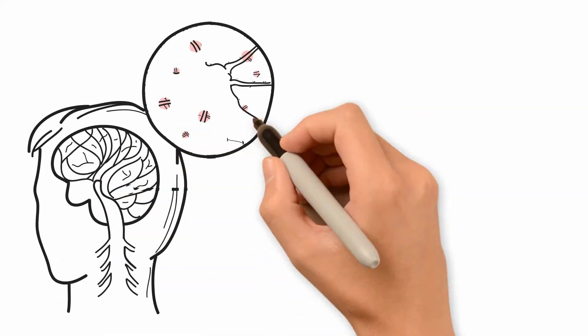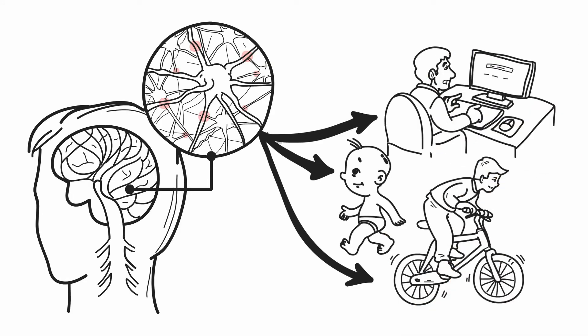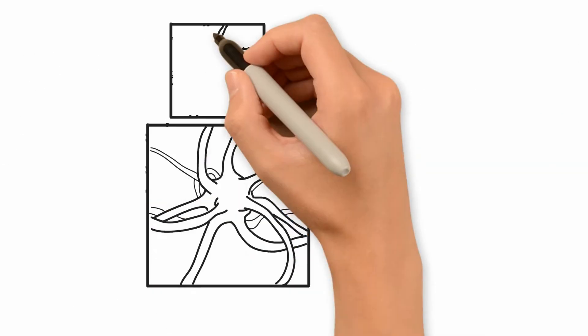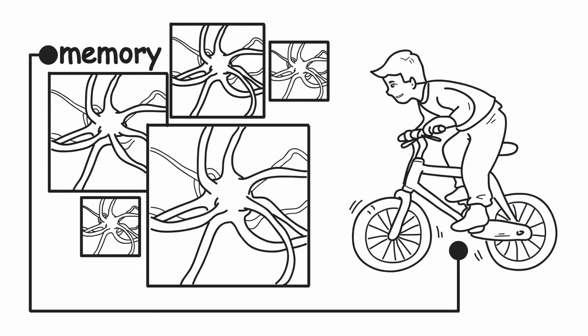We develop neural pathways for everything. When we learn to walk, when we learn to type, when we learn how to ride a bike. And once we develop neural pathways, they're stored into memory. Like they say, you never forget how to ride a bike.